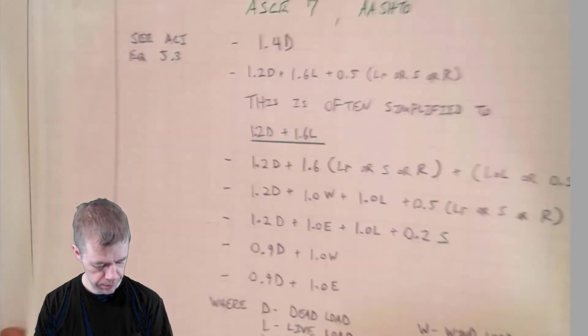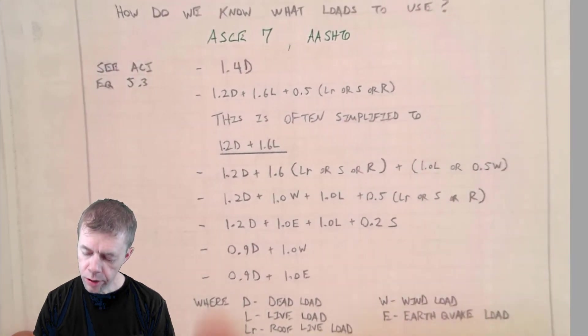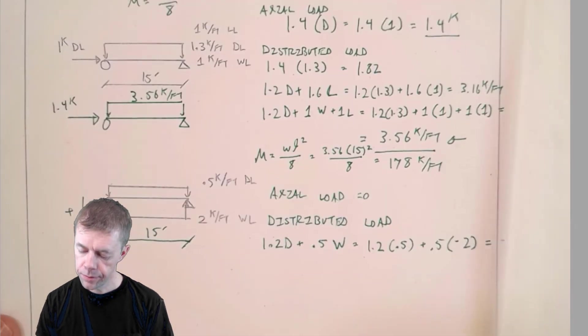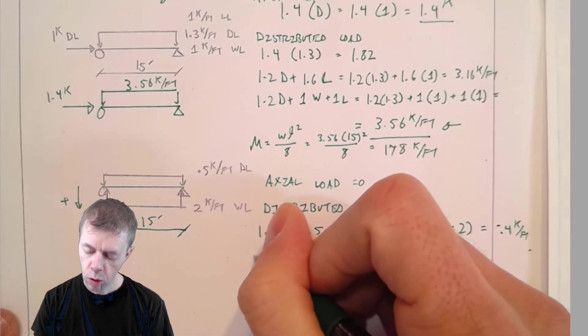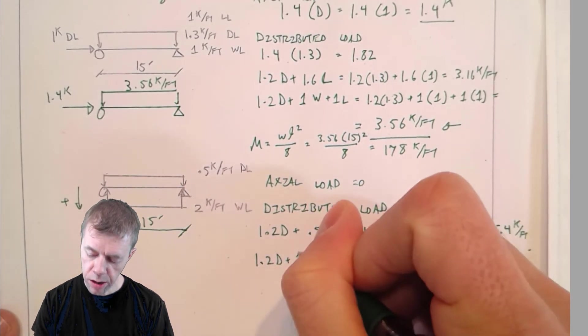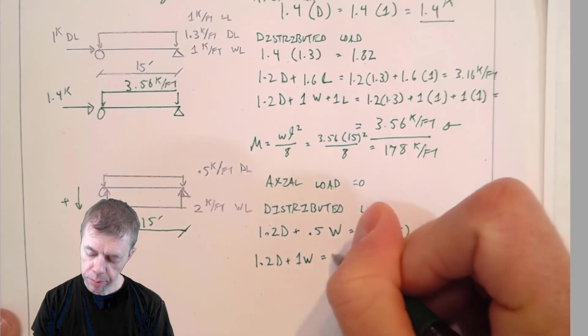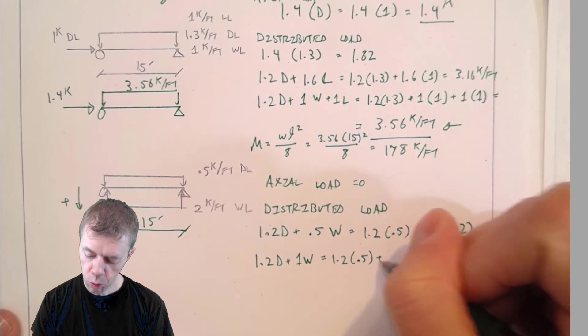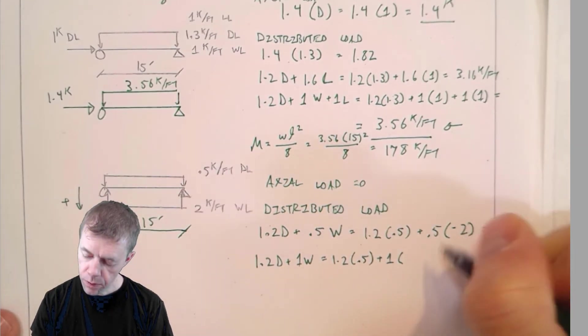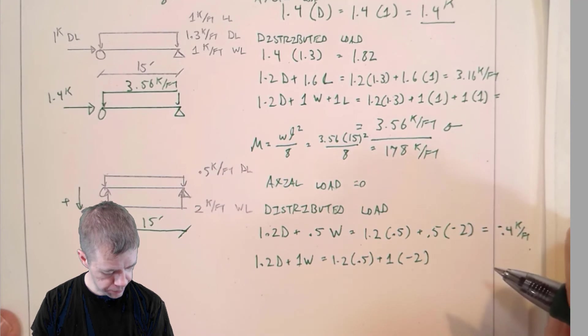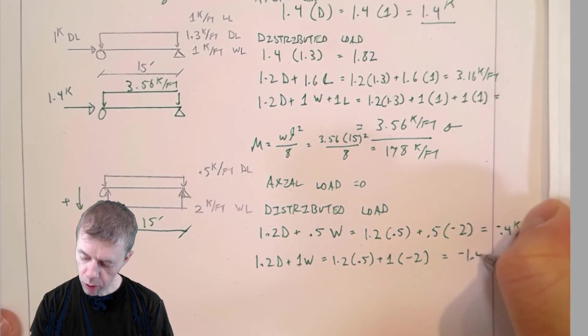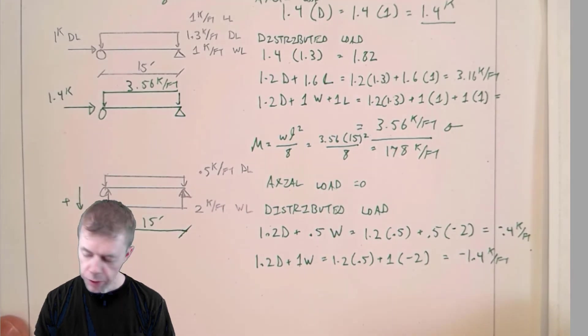Let's go on to another one. Here we got one underneath it. 1.2 dead plus 1 wind. Let's try that one. 1.2 dead plus 1 wind. That's 1.2 times 0.5 plus 1 times negative 2. And that's equal to negative 1.4 kips per feet.